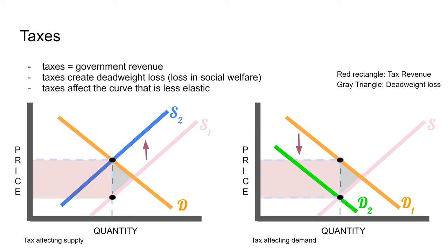Taxes are what the government uses to get revenue. Taxes create deadweight loss because of the upward shift in supply or the downward shift in demand. Taxes will affect the curve that is less elastic. On the graphs shown here, the triangle represents your deadweight loss — your loss in total surplus — and the red rectangle is basically the revenue generated by taxes.